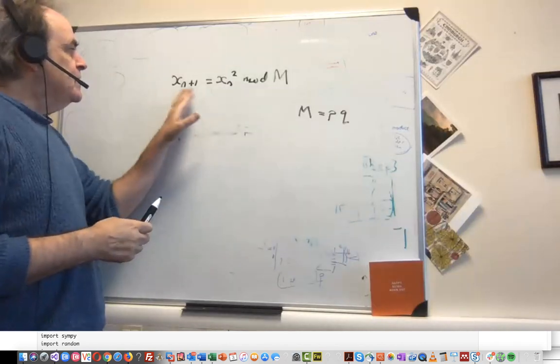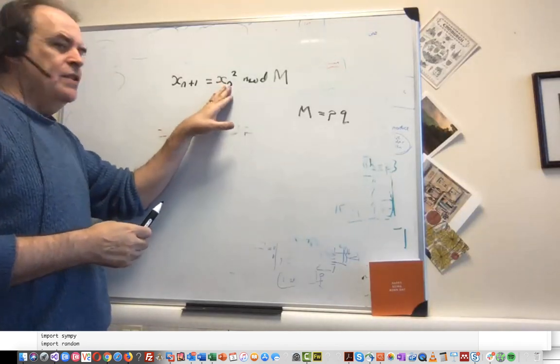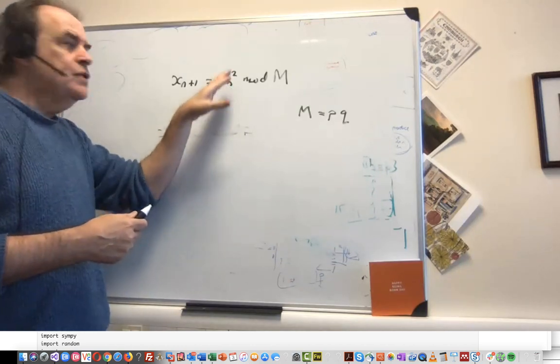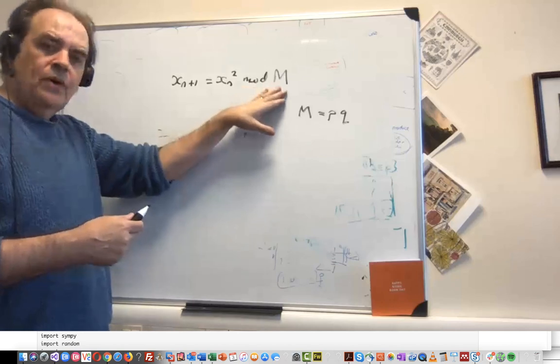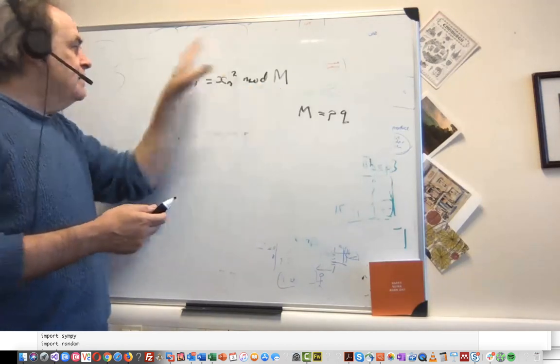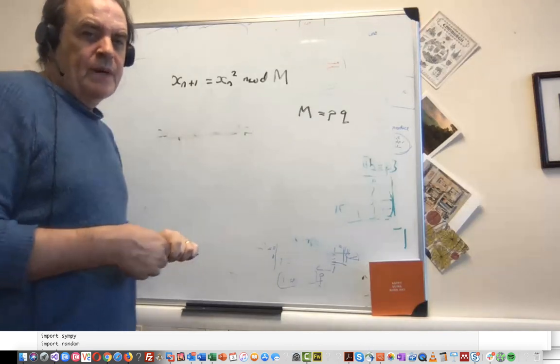So the sequence that we have is based on the previous value of the state, x_n squared, and then we take the mod, which is the division by m, and then we take the remainder to find x_{n+1}.